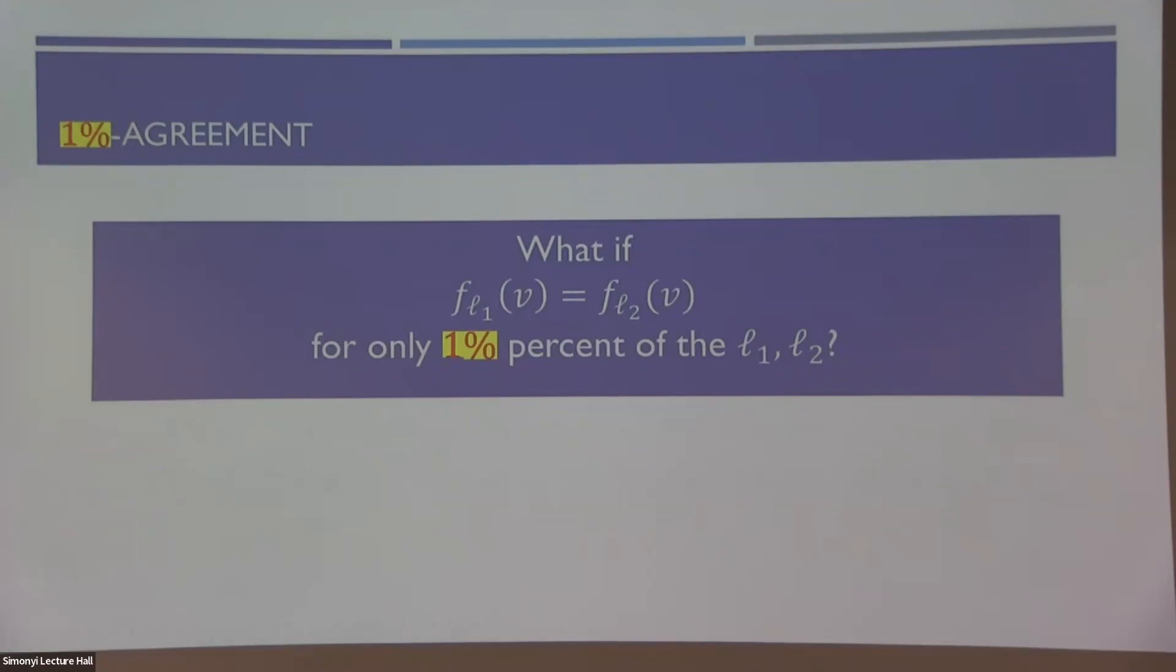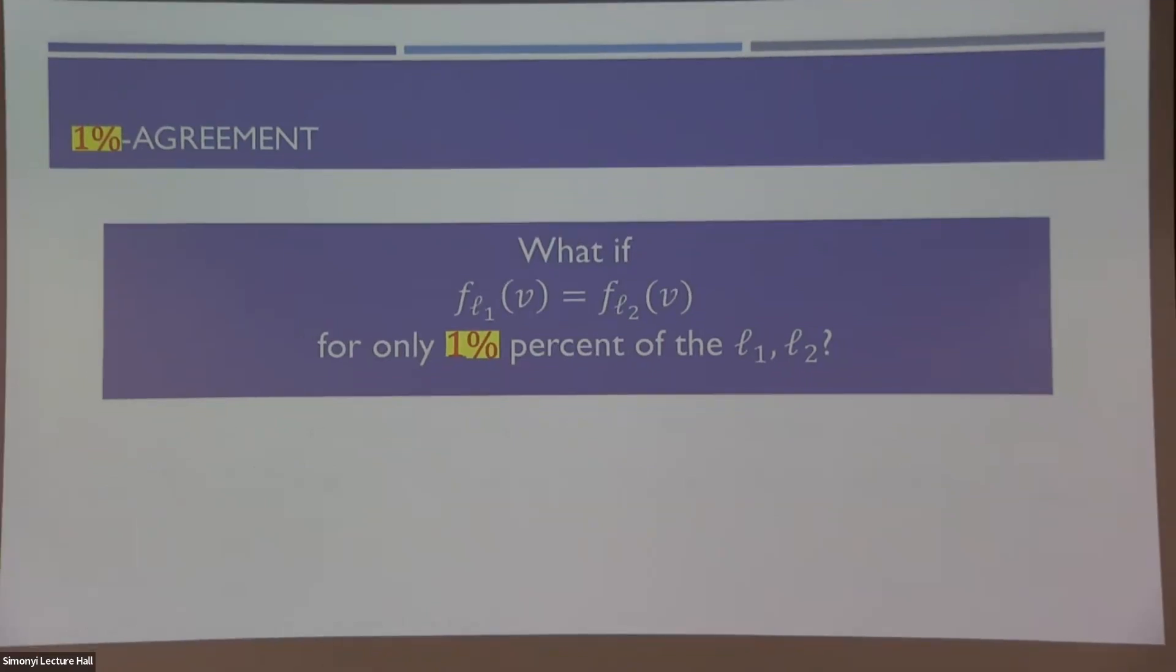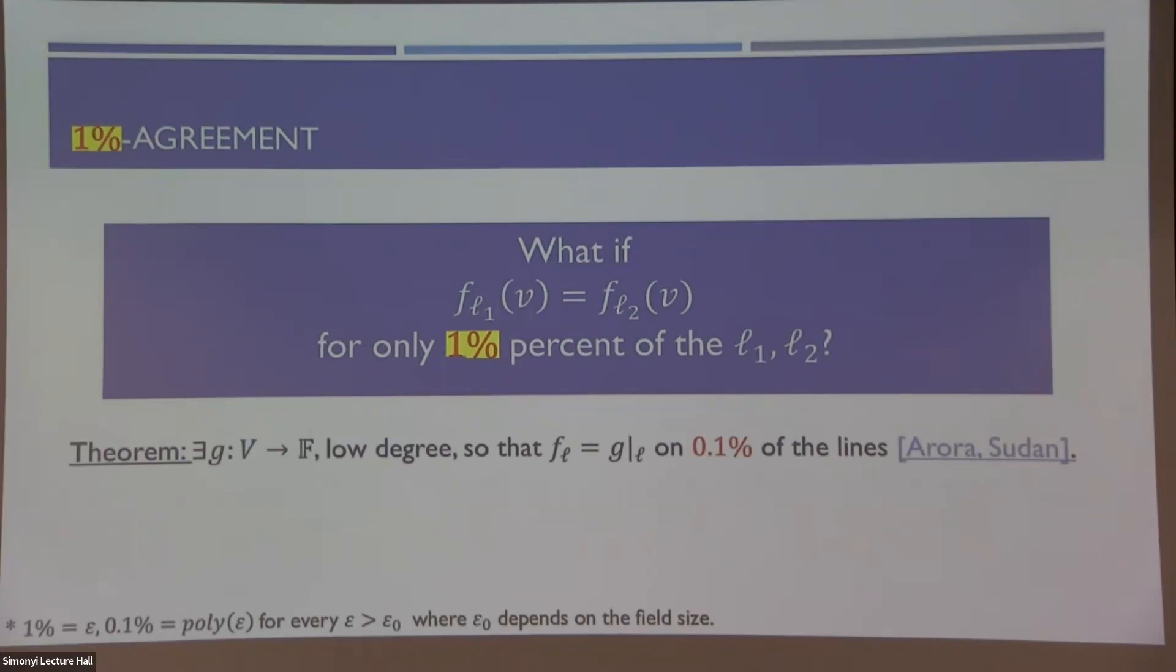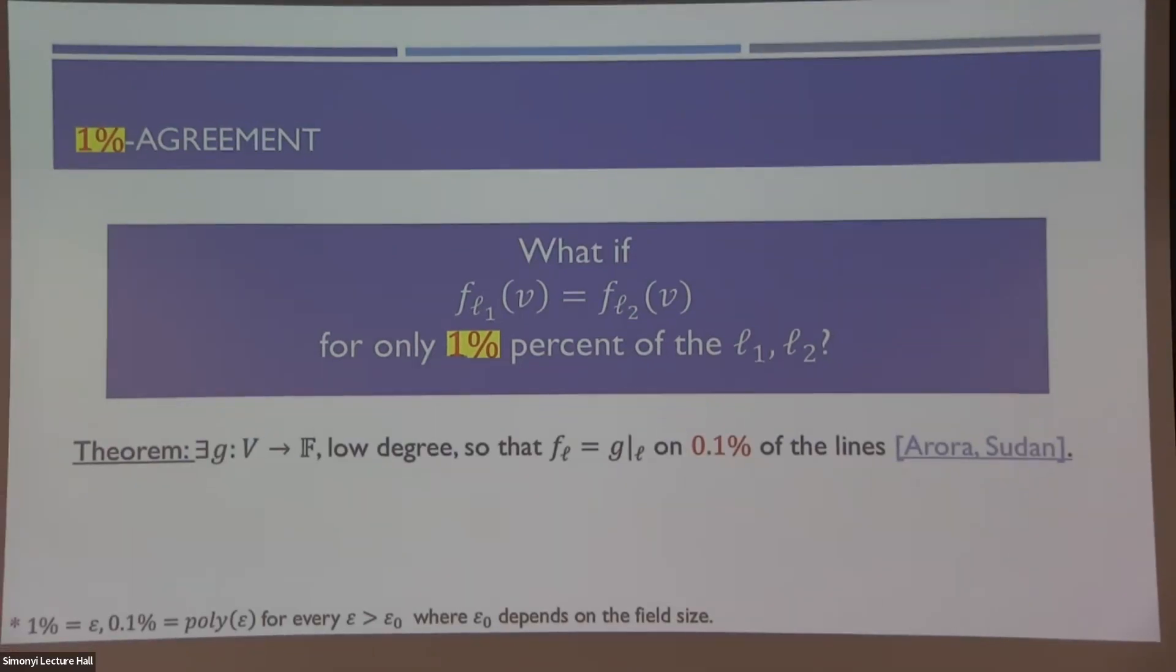In fact, I wanted to comment that even a stronger statement holds in this case. Even if you only have a small but constant fraction of these pairs of lines that are consistent, then already you can recover some structure there. You can find a low degree function that agrees with these local sets of functions on another maybe small constant on the line. So even if we know this very mild property, we can already find some structure.